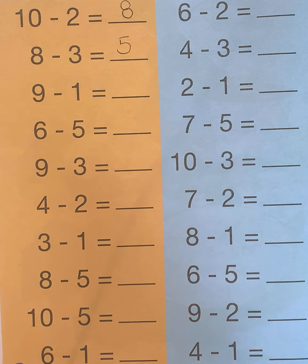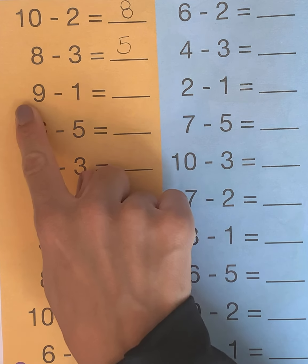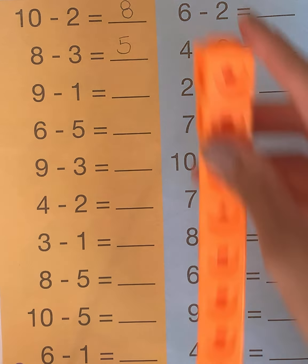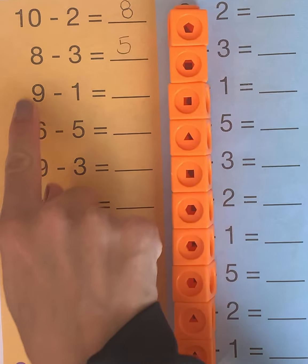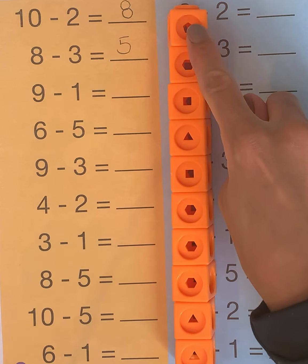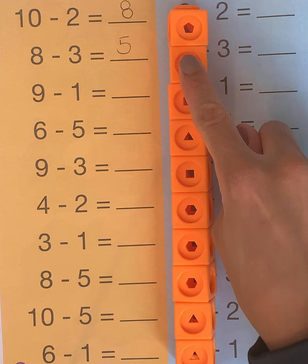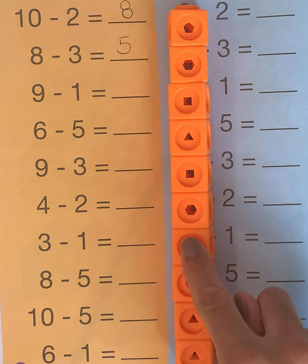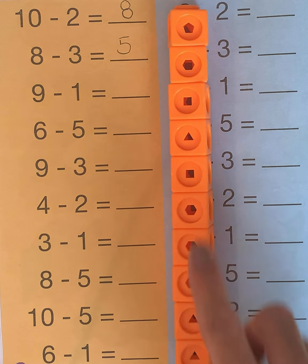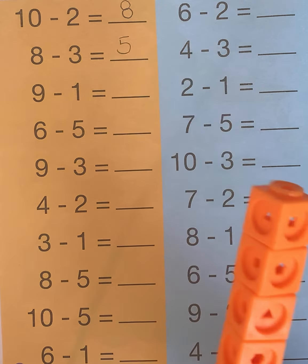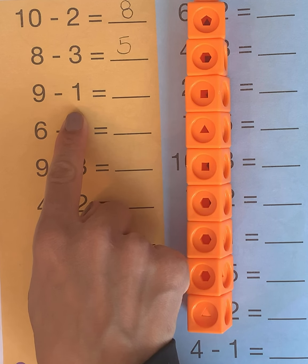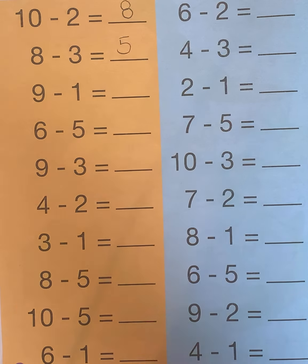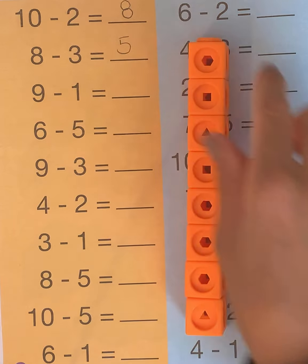Our next problem is 9 minus 1. So let's count 9 cubes — that's our first number: 1, 2, 3, 4, 5, 6, 7, 8, 9. So we have 9, and we want to take away 1. Just 1. How many are left?